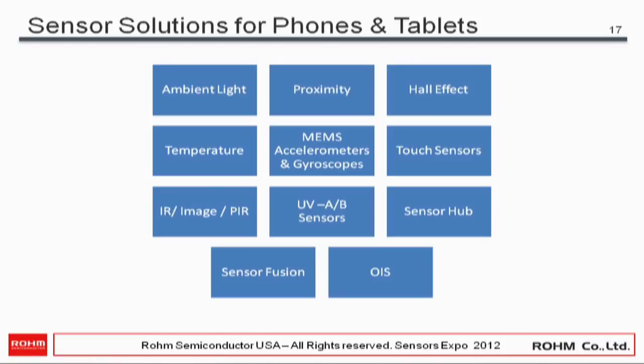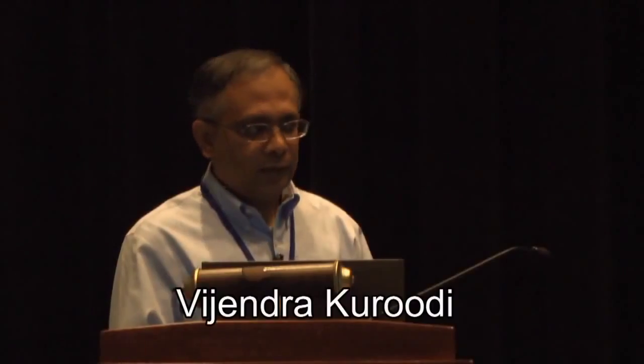There are ambient light sensors, proximity sensors, Hall effect, temperature, MEMS accelerometers and gyroscopes, touch sensors (resistive and capacitive), infrared image sensors, IR photodiodes, PIR sensors for longer-range human presence detection, and ultraviolet UV-AB sensors. The UV sensor for phones came out a few years ago but never really picked up — though it could take off, and there is a good way to make that happen.